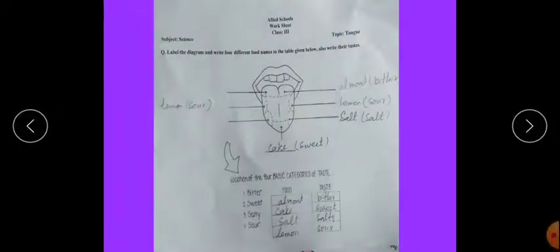First worksheet is about tongue that we have taught in earlier lectures on page number 9. You can take help from page number 9 about this worksheet. Label the diagram and write four different food names in the table given below. Also write their taste.